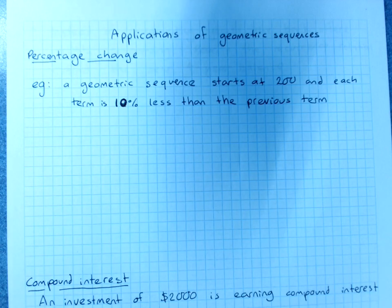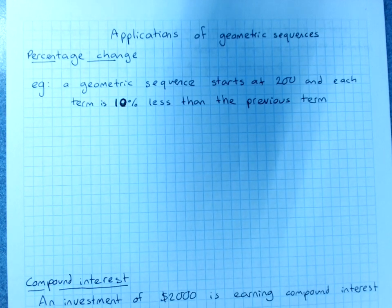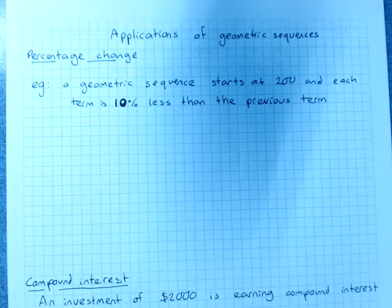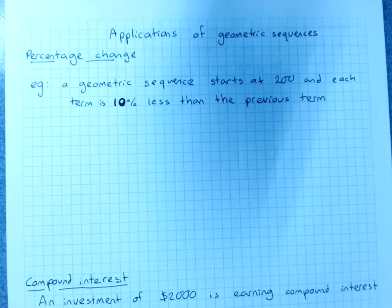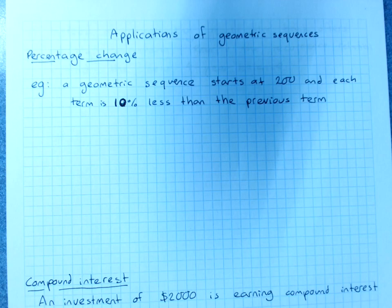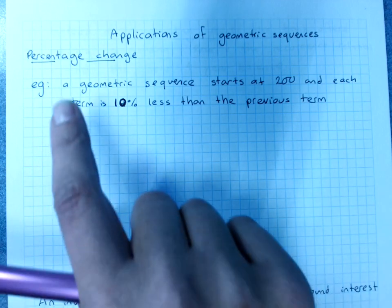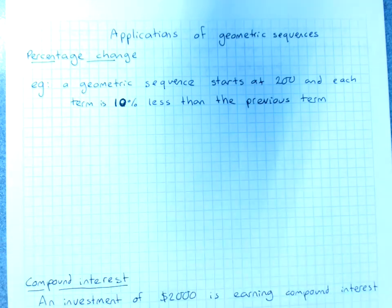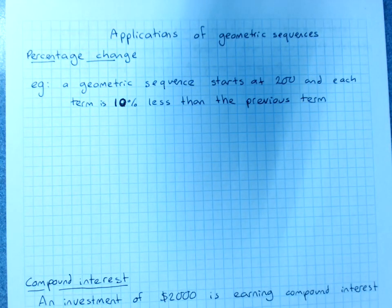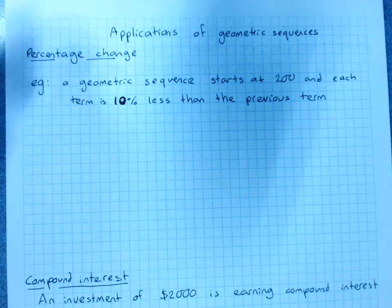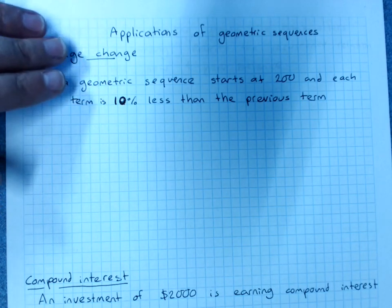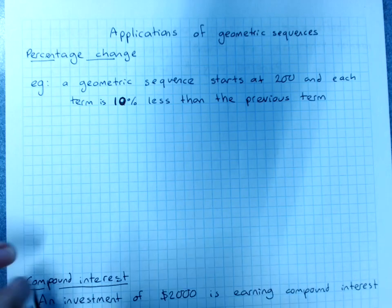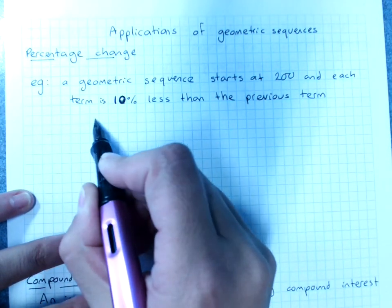We're mostly focusing at the moment on percentage change and compound interest, which is of course still percentage change. A geometric sequence starts at 200 and each term is 10% less than the previous term. So previously when we've looked at a percentage it's been a percentage of the starting value, but this is 10% less than the previous term.